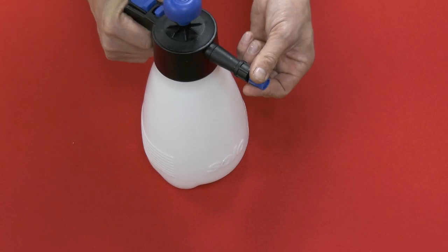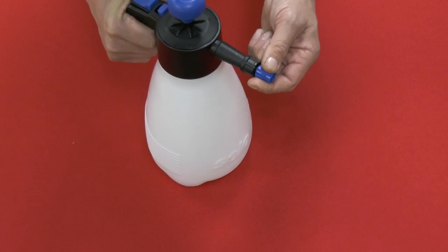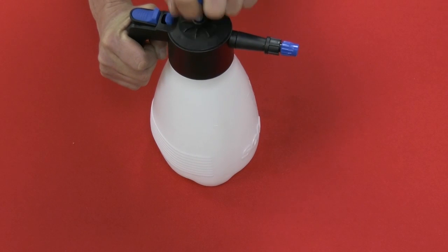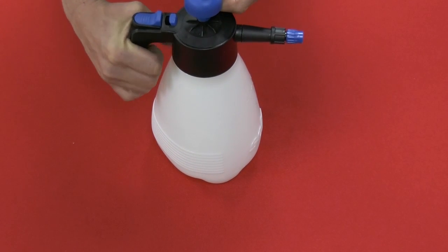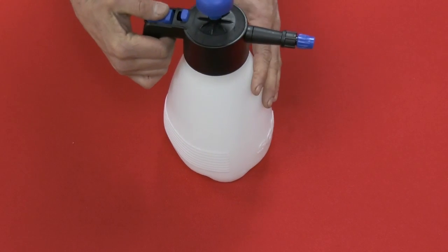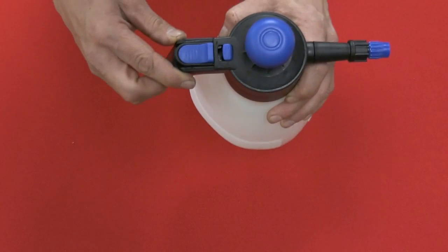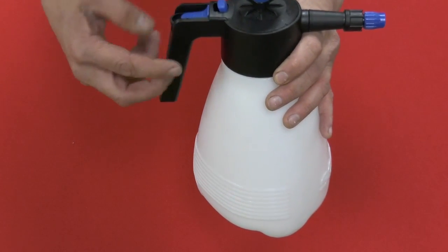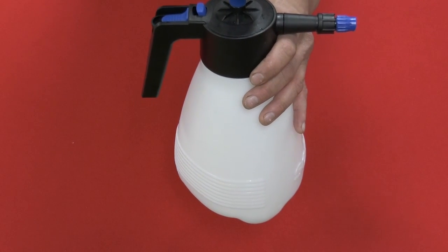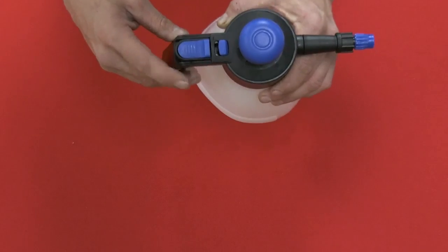This is where you adjust if you'd like a stream or a fine mist. Simply pump up the sprayer and pull the trigger. Now I haven't put any liquid in this yet. You see how the design of this trigger allows you to lock it in to have a continuous stream. You can lock it or unlock it.